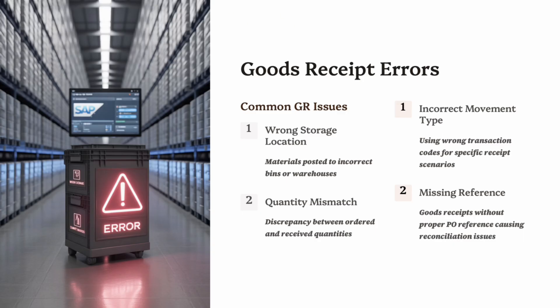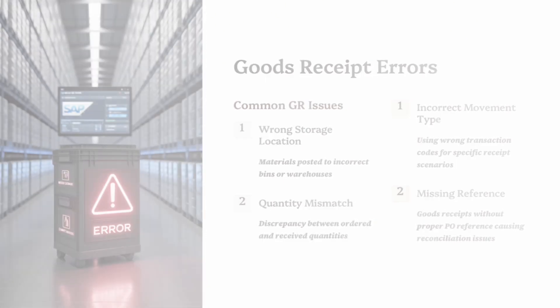To fix these issues: always check PO details before posting GR, train warehouse staff on correct movement types, use SAP tolerance limits to allow small differences without blocking, and run reports like MB5T or MB52 to reconcile stock balances regularly. A clean GR process is the key to keeping stock accurate and ensuring smooth invoice verification later.